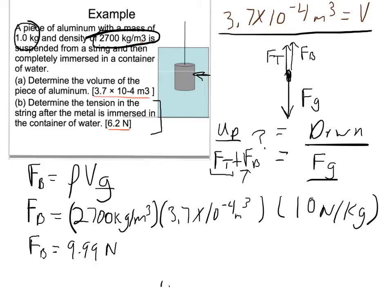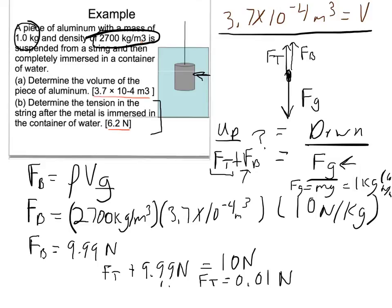Well, now I can plug that in here, along with the weight. And let's do this real fast. So this thing is 1 kilogram, and Fg equals mg. So that's 1 kilogram times 10 newtons per kilogram. So that's 10 newtons. So now I know that my tension plus 9.99 newtons equals 10 newtons. And if I subtract that out, my tension is then 0.01 newtons. And that is the tension when the aluminum is in the water.